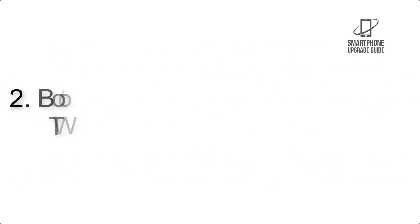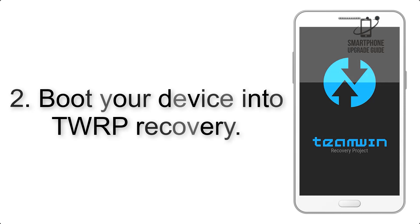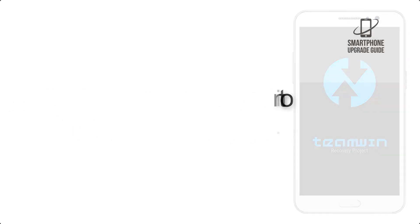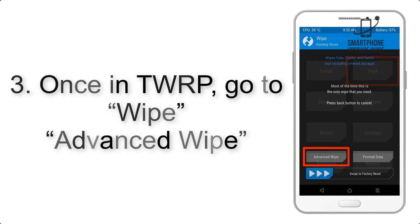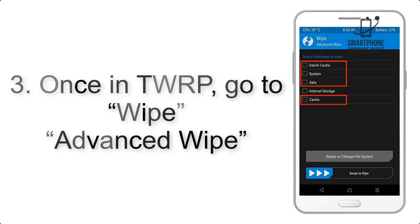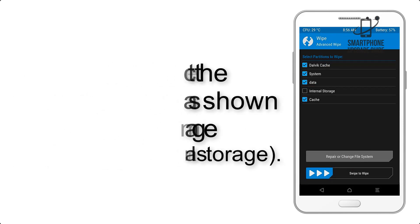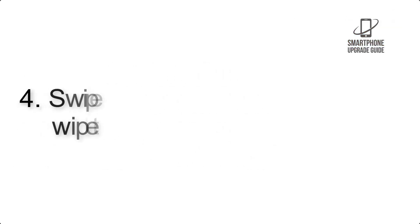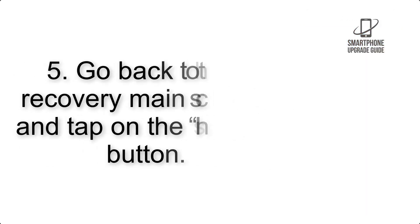Step 2: Boot your device into TWRP recovery. Once in TWRP, click on Wipe, then Advanced Wipe, and select the checkboxes as shown in the image, excluding internal storage. Step 4: Swipe the button to wipe the device.